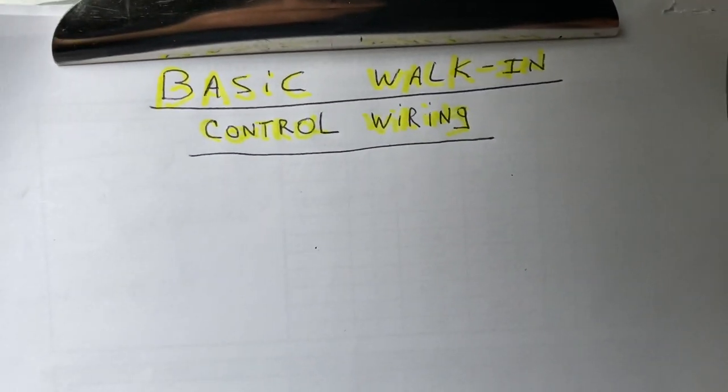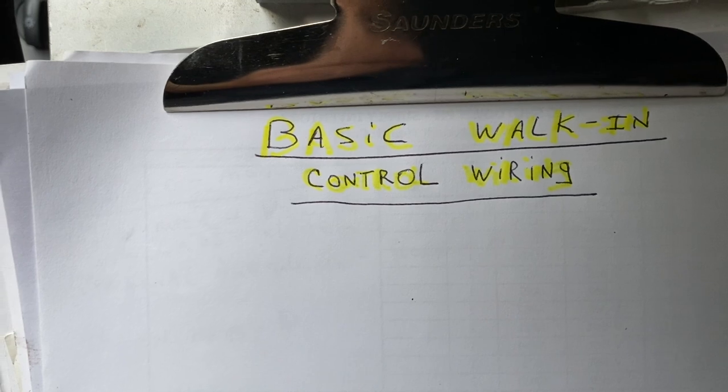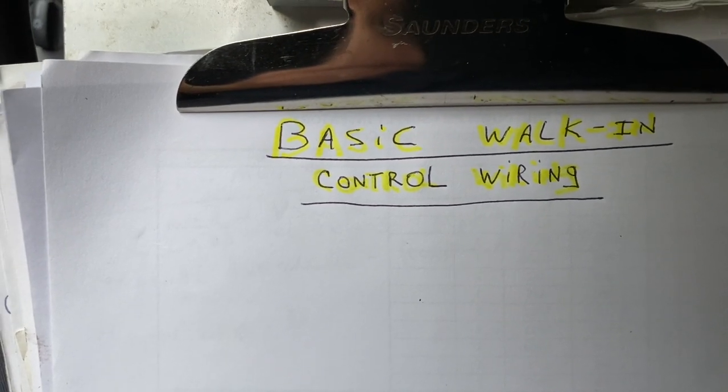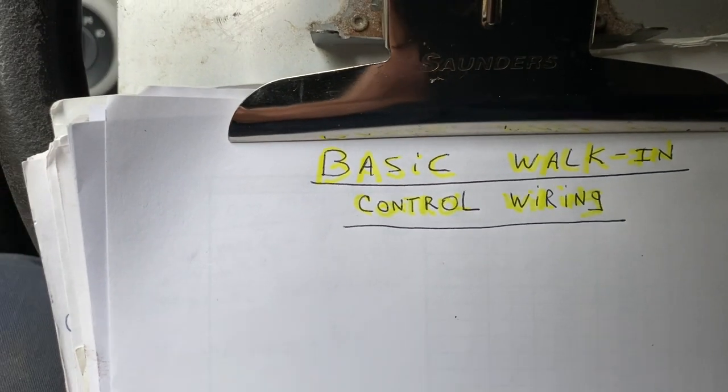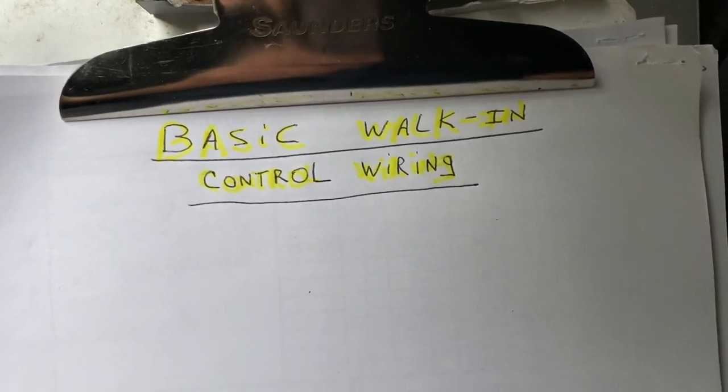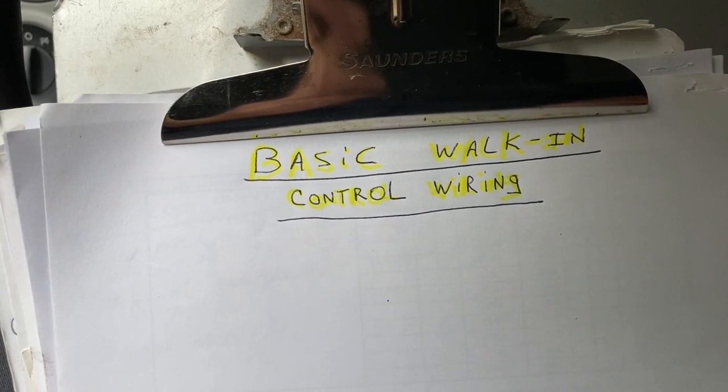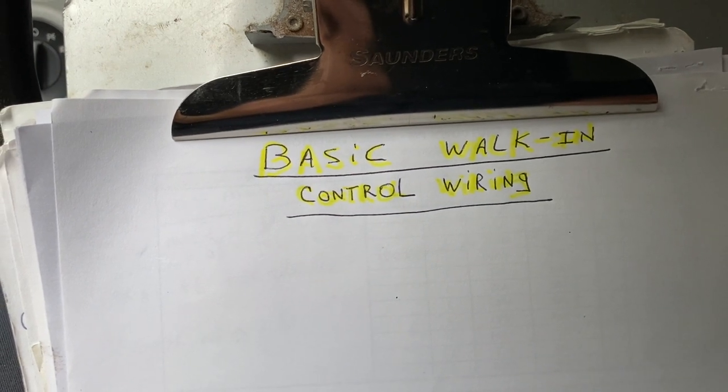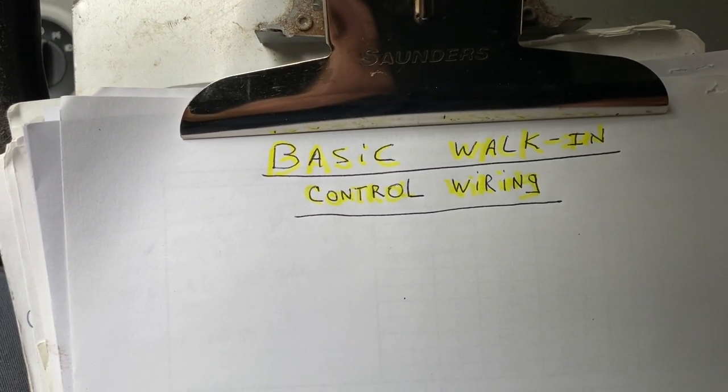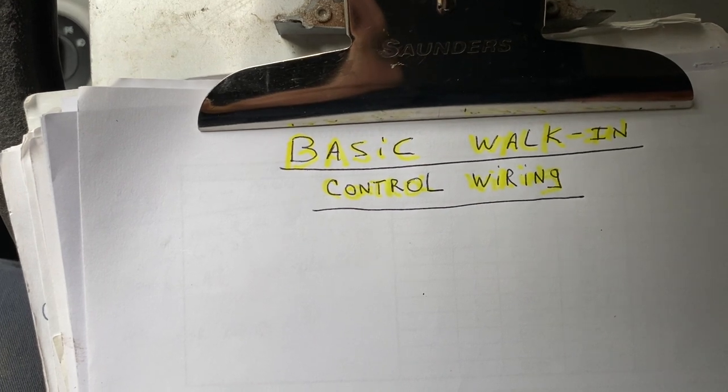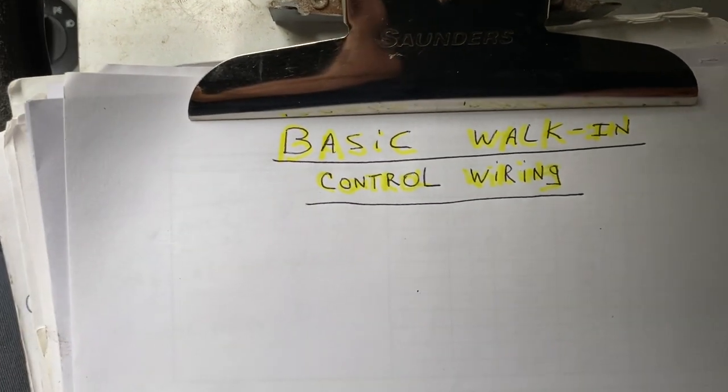Alright, I'll go over basic medium temp walk-in box control wiring. Just a regular old walk-in cooler. We'll start inside the walk-in box with the evaporator coil first, and then we'll work our way to the roof for the condensing unit.